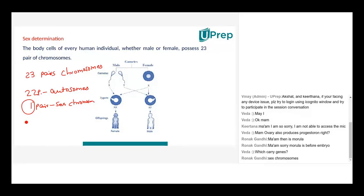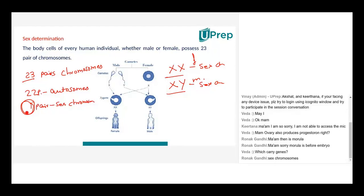That one pair of sex chromosomes defines whether a person is a boy or a girl. Females have XX as the sex chromosome, and males have XY. This is the only differentiator between males and females chromosomally. The autosomes carry all other traits — hair color, skin color, height, body structure.